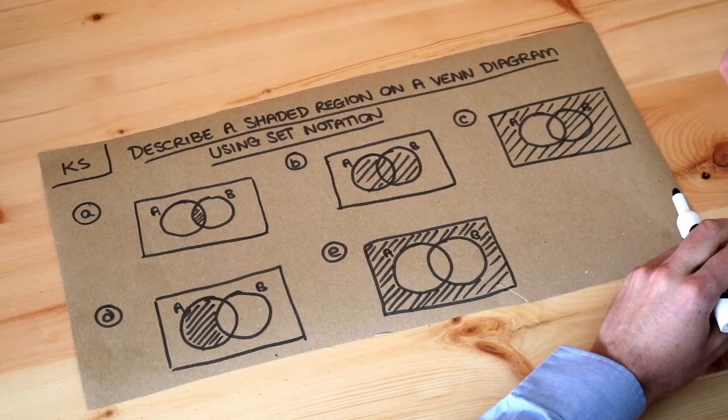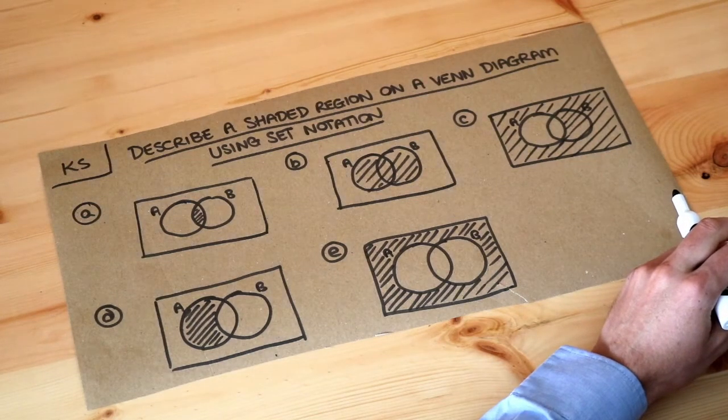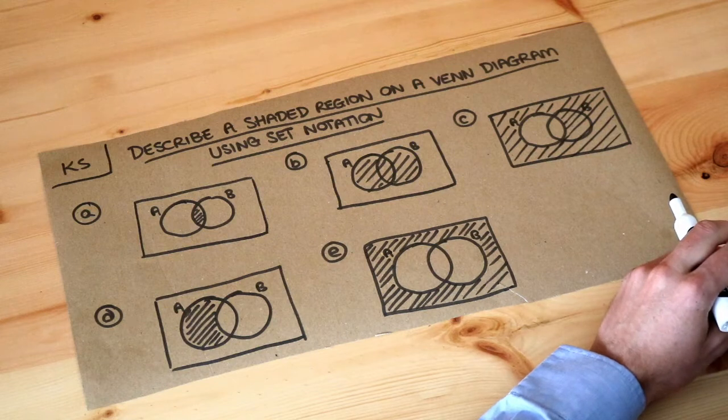Hello and welcome to this Dr. Ross Mass's key skill video on describing a shaded region on a Venn diagram using set notation.